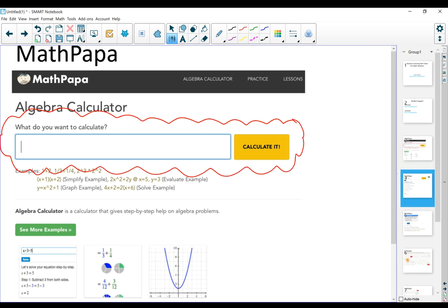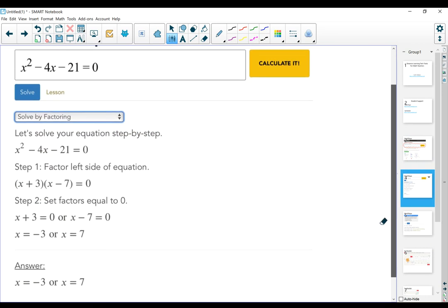So let's say that I was solving a quadratic equation like x squared minus 4x minus 21 equals 0. Once I hit Calculate, it's going to show me the solution, but it's also going to show me step-by-step instructions on how to get there.